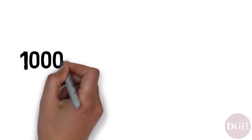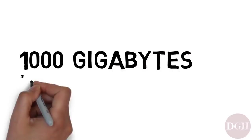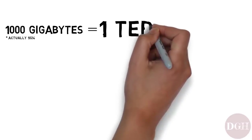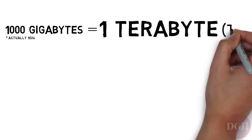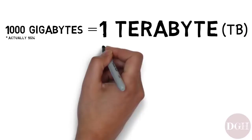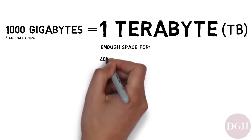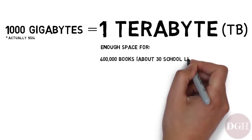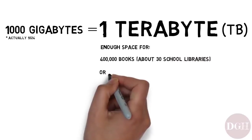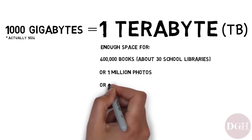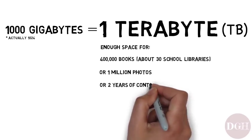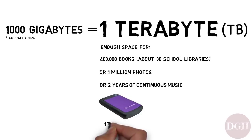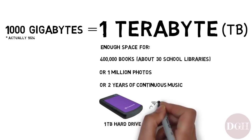A thousand gigabytes is called a terabyte, often abbreviated as TB. It's enough space to hold about 400,000 large books — that's 30 school libraries — a million pictures, or two years of continuous music. Today, you can buy a one terabyte hard drive for under $50. It's pretty amazing.